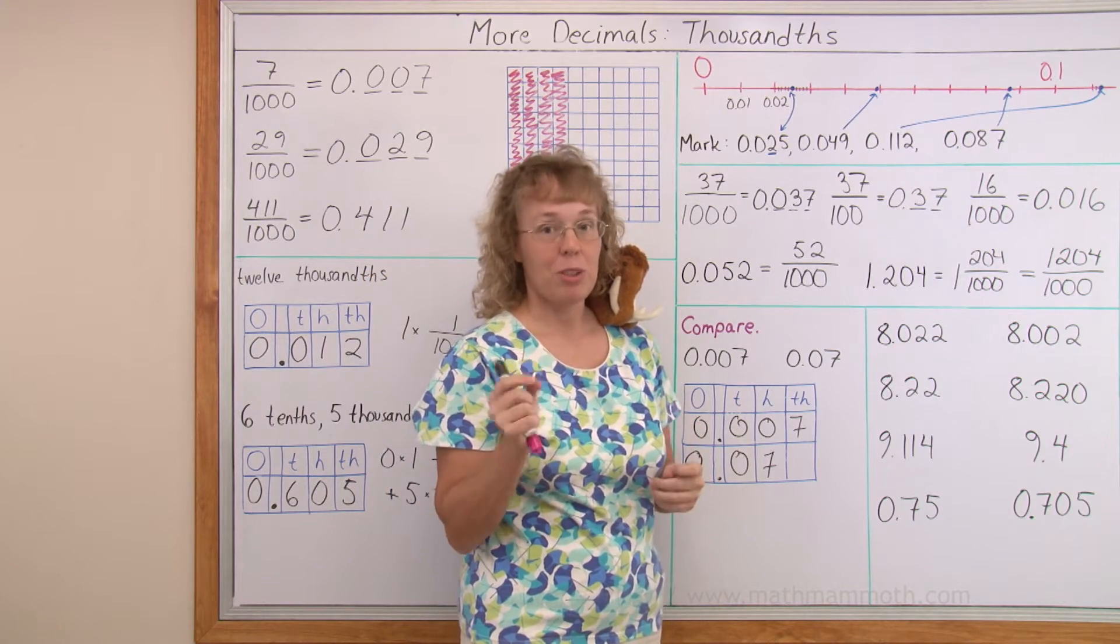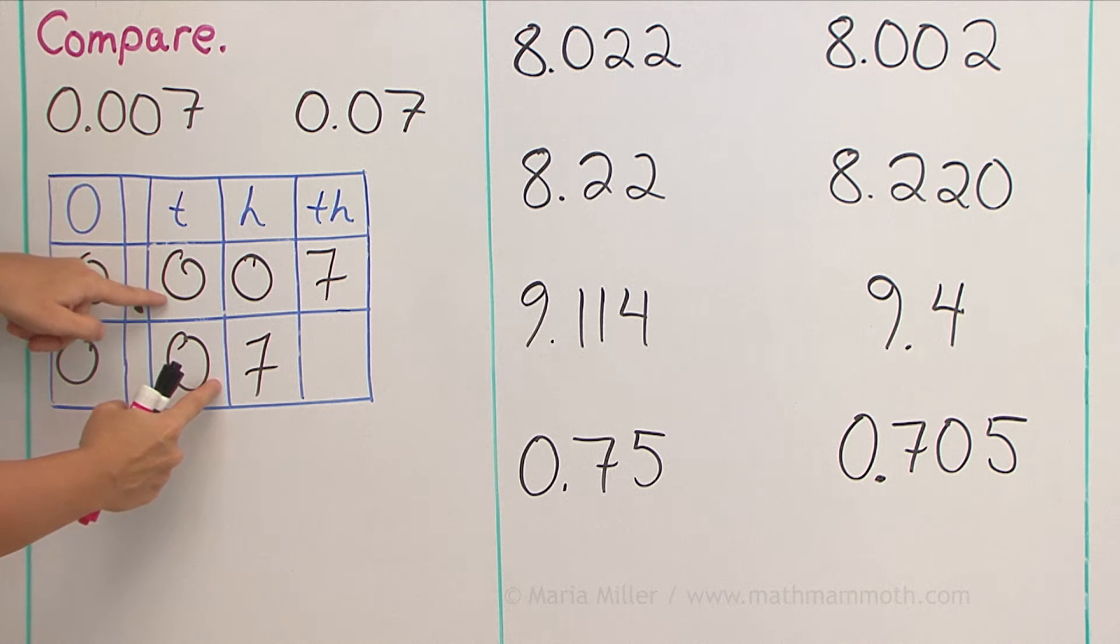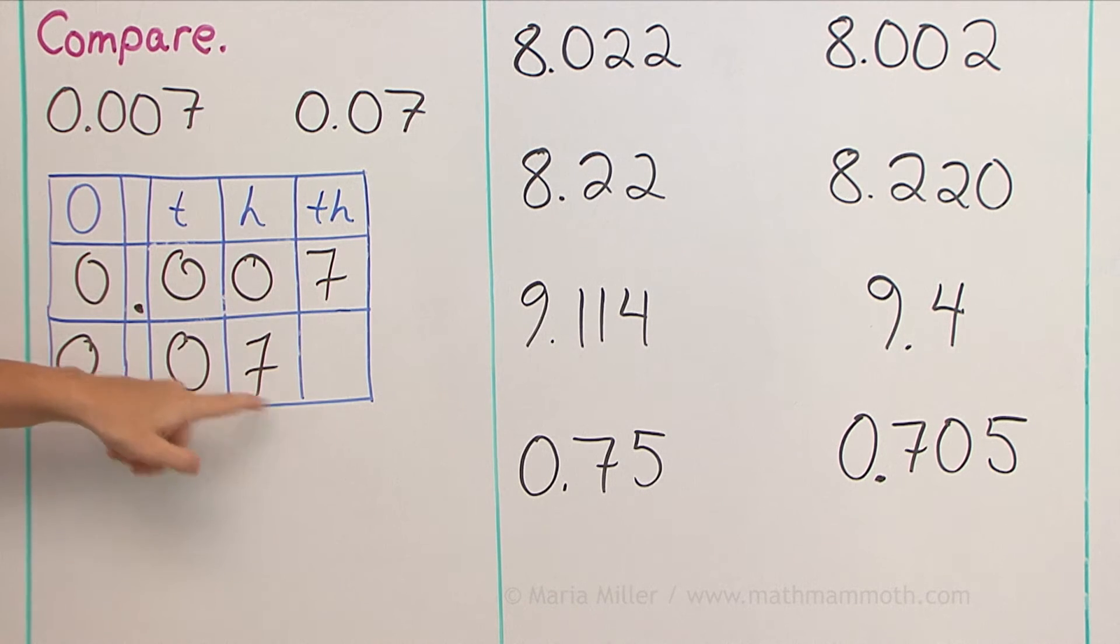Now we're going to compare these two numbers place by place. Starting here at the ones place, okay, they have the same number of ones. Then in the tenths place, they have the same number of tenths. But in the hundredths place, there's seven hundredths, whereas there's none here. So this is where this bottom number wins, so to speak. It is the bigger number.